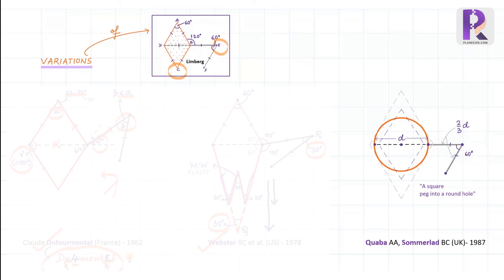The final modification or variation of Limburg's flap that we'll learn today was by Quaba and Sommerlad. They, instead of turning a circular defect into an outer rhombic defect, used a smaller rhombic flap which was two-thirds the diameter of the circle and used it to cover the circular defect, which they described as pegging a square into a round hole. By doing so, they prevented the loss of extra tissue to get the bigger rhombic defect and also prevented the need for a larger rhombic flap.